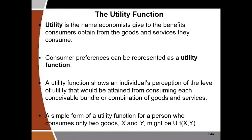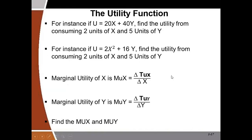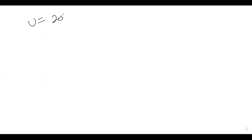Let's assume the utility function is: Total Utility = 20X + 40Y. We need to find utility when we consume 2 units of X and 5 units of Y. Substituting into the function: U = 20(2) + 40(5), which gives us 240 utils.